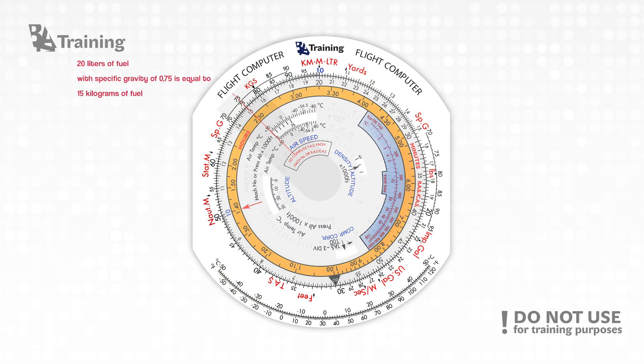Once aligned, we can read that for example 20 liters of fuel with the specific gravity of 0.75 is 15 kilograms of fuel.